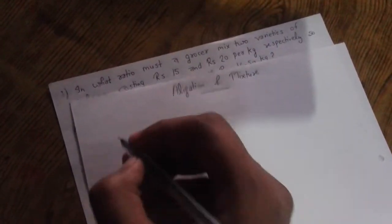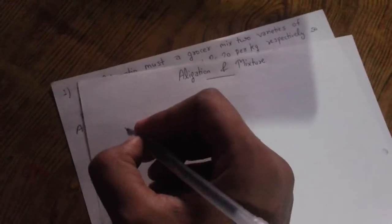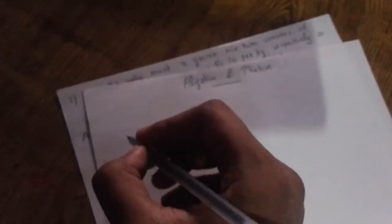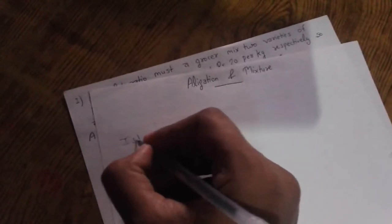Today our topic is alligation and mixture. In this type of question we assume two types of values: first is cheaper value and second one is dearer value, that is first type of ingredient.